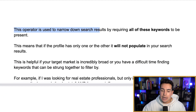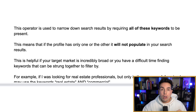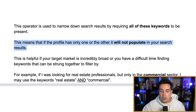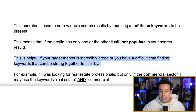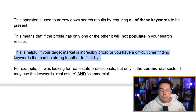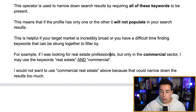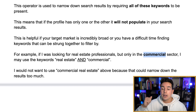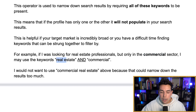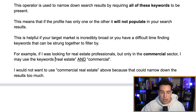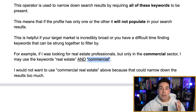Now let's talk about the AND operator. This operator is used to narrow down your search results by requiring all of those keywords to be present — meaning if the profile has only one or the other, it will not populate in your search results. This is helpful if your target market is incredibly broad or if you have a difficult time finding keywords that can be strung together. For example, if I was looking for real estate professionals but only in the commercial sector, I may use the keywords "real estate" AND commercial.